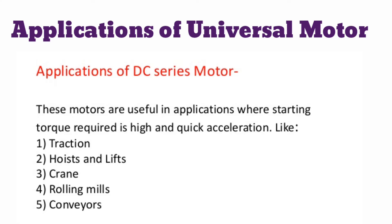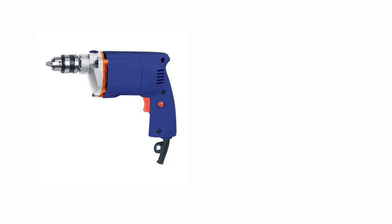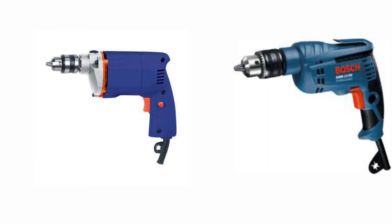The applications of a universal motor are different from those of a DC series motor. DC series motor applications include traction, hoists, lifts, cranes, rolling mills, and conveyors. Universal motor applications include portable drilling machines, hair dryers, grinders, table fans, blowers, polishers, and kitchen appliances. For example, a drilling machine connected to AC supply is actually a universal motor — you can observe the sparking while drilling on walls.